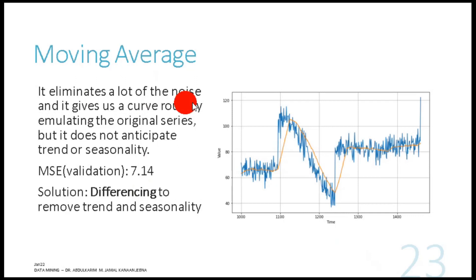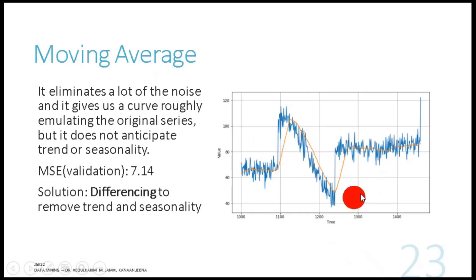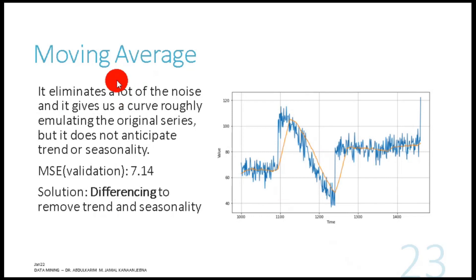The moving average approach smooths out a lot of noise in the data, giving a smooth orange line compared to the noisy blue original. However, moving average cannot anticipate trend and seasonality, so it does not work well on data that contains those characteristics — the MAE will be higher than the naive forecasting MAE. To address this, we apply a technique called differencing, which removes the trend and seasonality from the dataset before applying moving average.